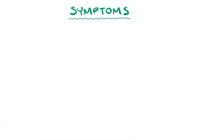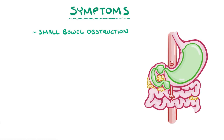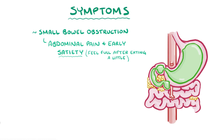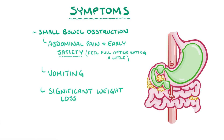Regardless of the cause, the main symptom of superior mesenteric artery syndrome is small bowel obstruction, and the onset can be gradual or pretty quick, depending on the underlying cause. Depending on the severity, symptoms can range from abdominal pain and early satiety — where someone feels full after eating only a tiny bit — to vomiting and significant weight loss. Vomit can contain bile, which is secreted into the digestive tract before the point of compression along the transverse duodenum.